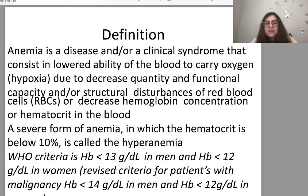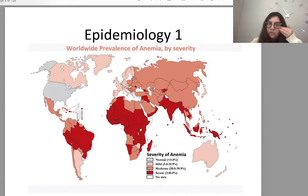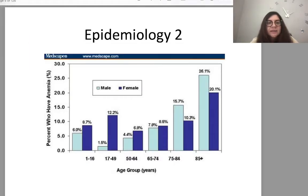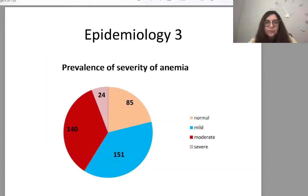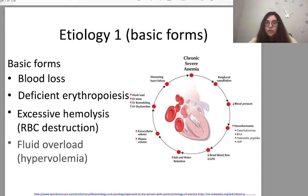The RICE criteria for patients with malignancy is hemoglobin less than 14 in men and less than 12 in female patients. Epidemiology shows prevalence differs between countries. Risk of anemia increases with age, being highest in young adults aged 17–50 and in persons after age 75. In most cases severity is mild or moderate; severe cases are rare.